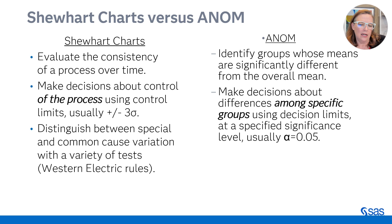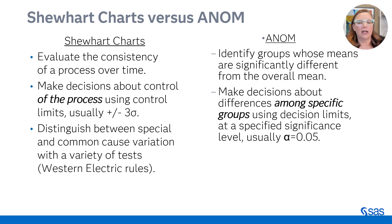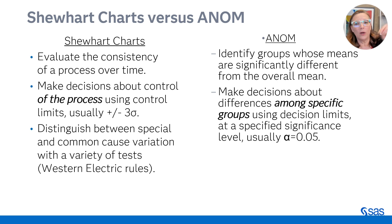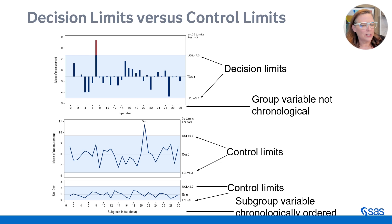When we compare Shewhart charts to ANOM: Shewhart charts are used to evaluate the consistency of a process over time, while ANOM charts are used to identify groups whose means are significantly different from the grand mean. Shewhart charts make decisions about process control using control limits usually set to plus or minus 3 sigma, whereas ANOM makes decisions about differences among specific groups using decision limits based on a significance level and sample size — usually 0.05. With Shewhart charts, you're distinguishing between special and common cause variation using western electric rules or by checking whether points are outside control limits. So decision limits vs. control limits — that's one of the big differences between ANOM and a Shewhart chart.